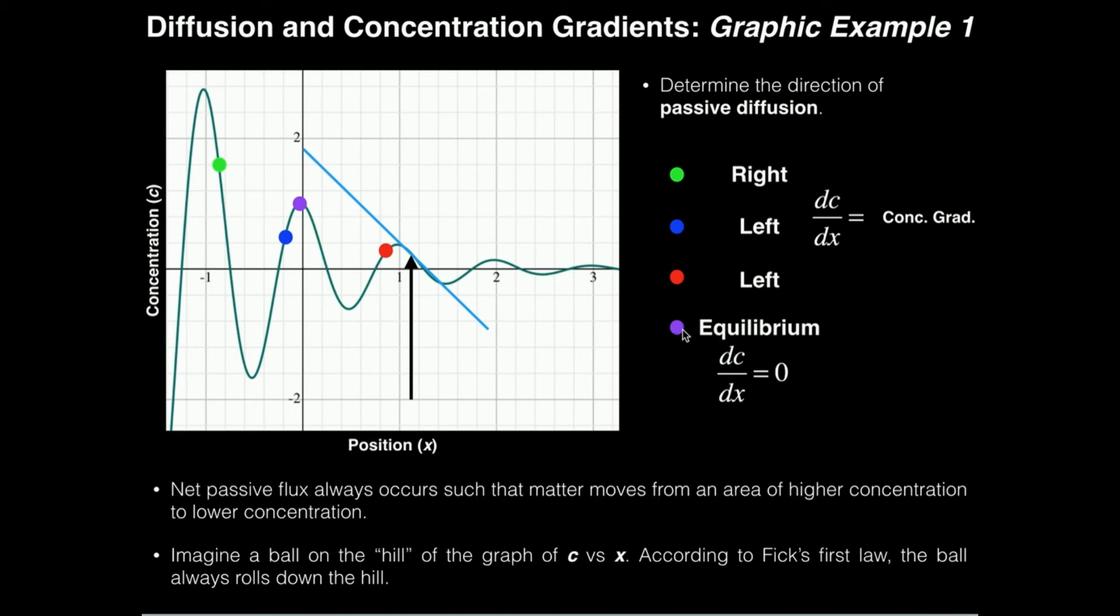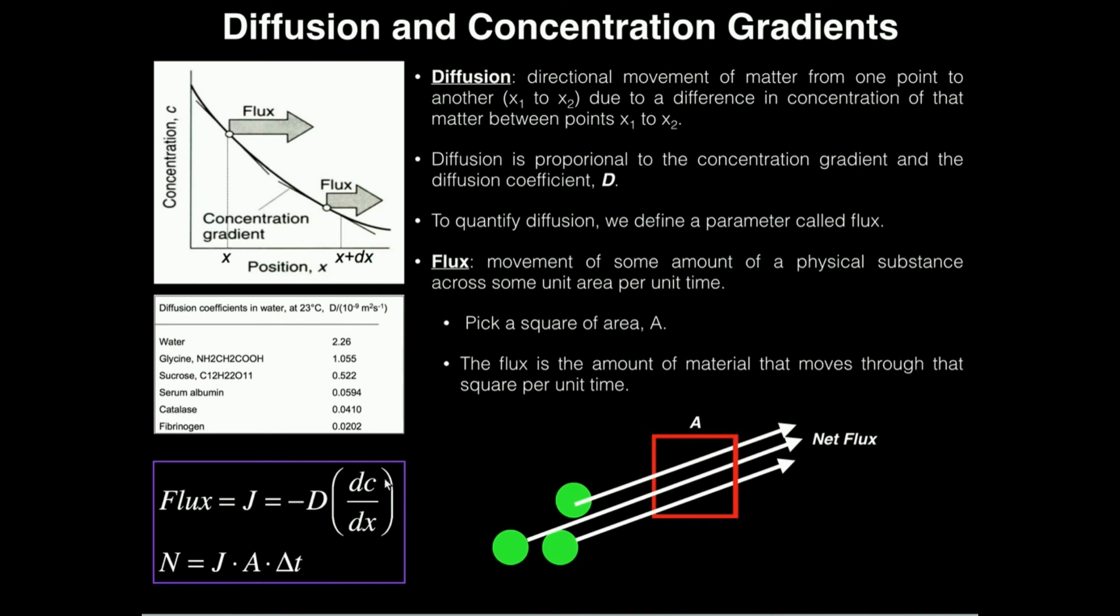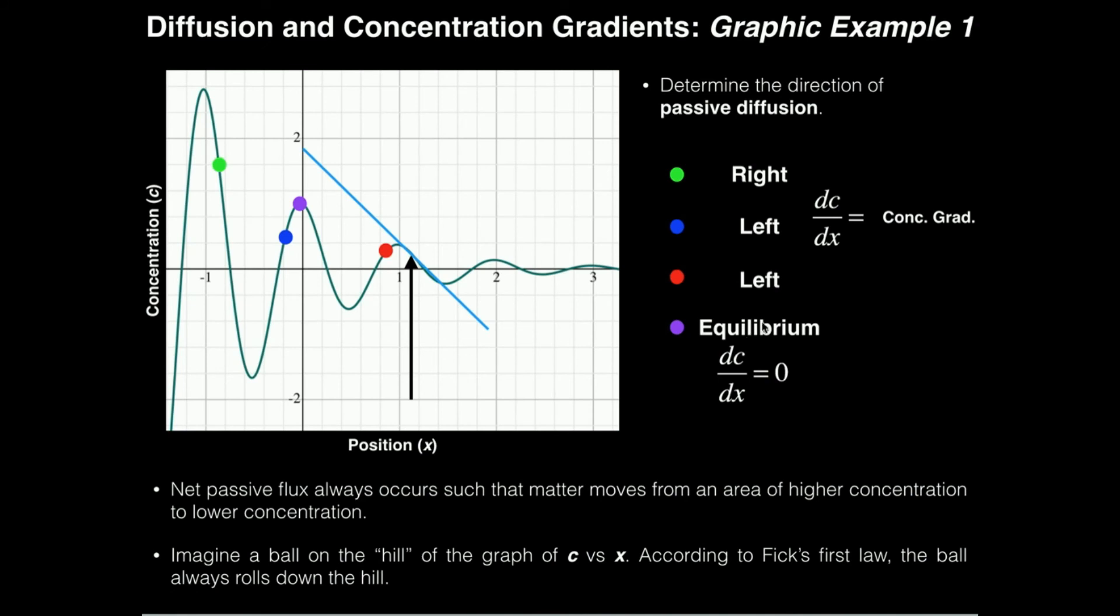Now here's a trick question. What about this purple point? What's the slope here? It's zero. Right on top of the point, the slope is zero. You can see that pretty easily at the top of that peak, the slope is zero. So what's the flux at that point? Well, if you just plug zero in here, there's no flux. Why is that? Because it's at equilibrium. You're at equilibrium at this purple point, so the slope is zero. There's no net concentration gradient, so there's no diffusion. There's no flux.